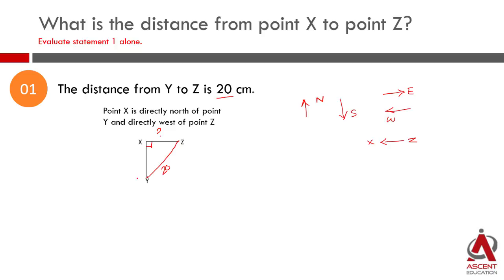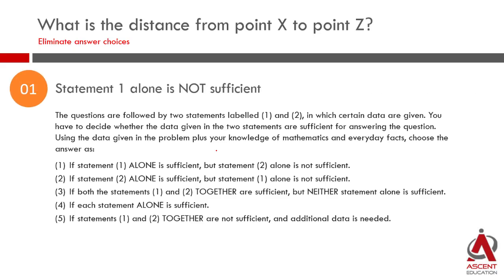X and Y have a distance, Y and Z have a distance. So we will not be able to find the answer from X to Z from this data. So statement 1 is not sufficient to find the answer. As usual, statement 1 not sufficient will eliminate answer choices 1 and 4. So we are down to answer choices 2, 3, or 5.